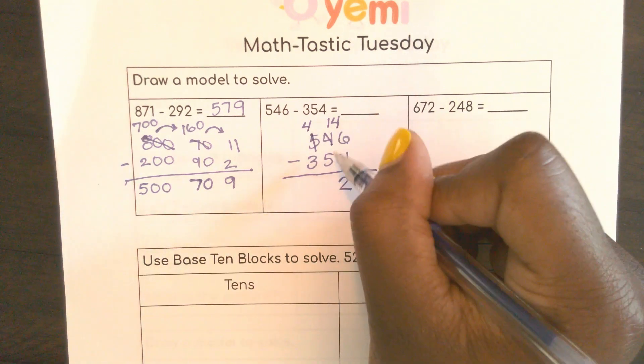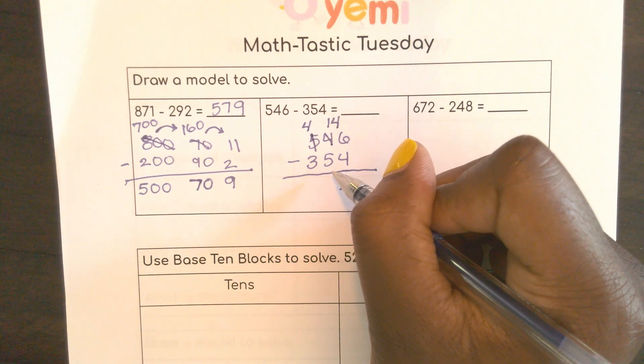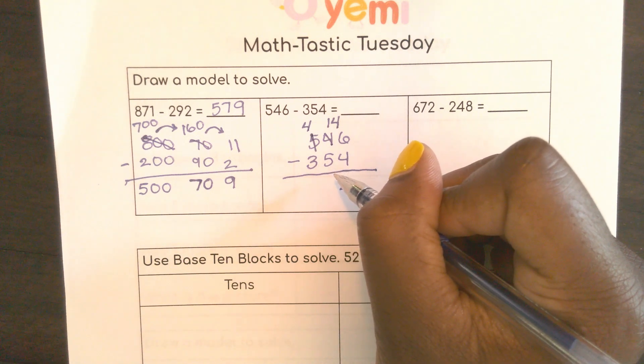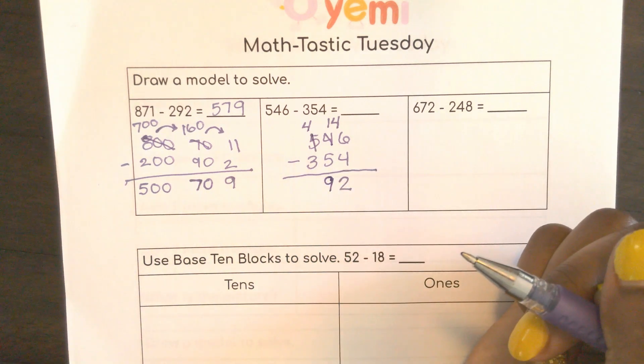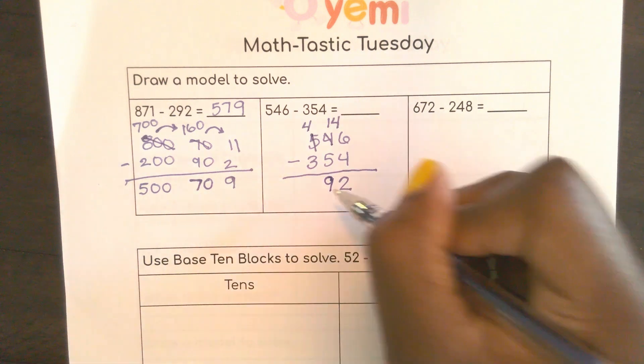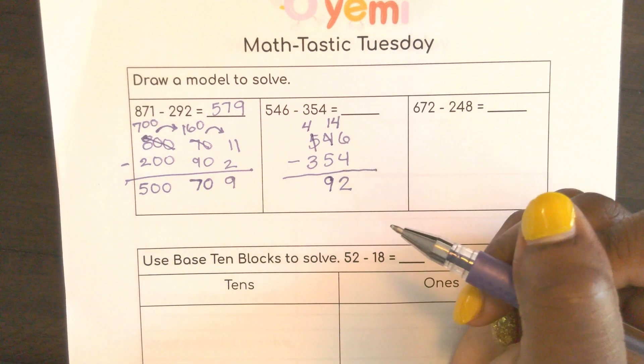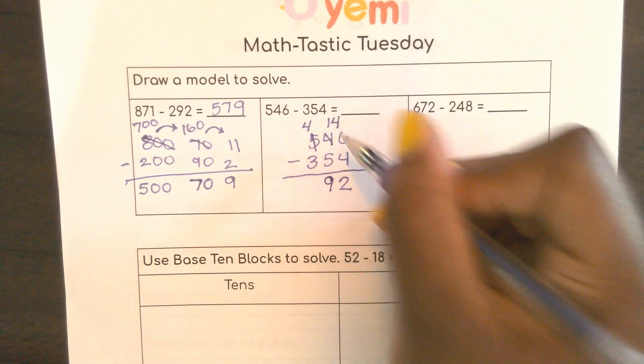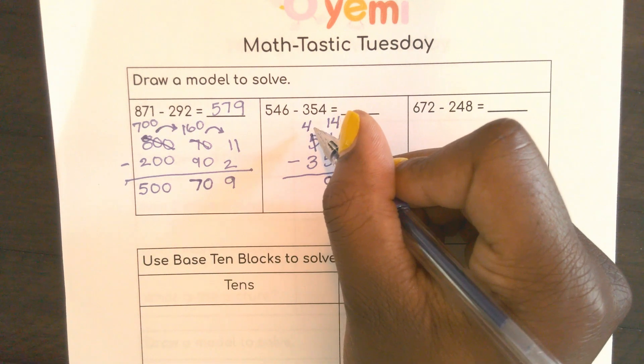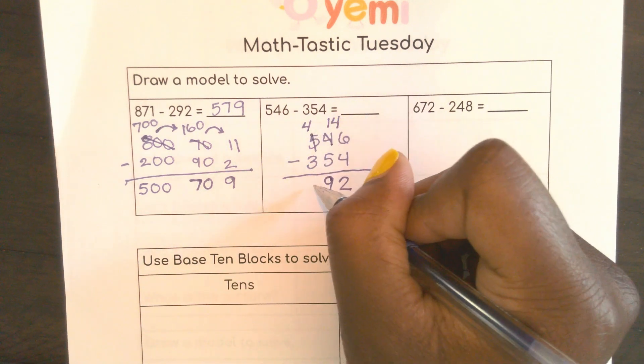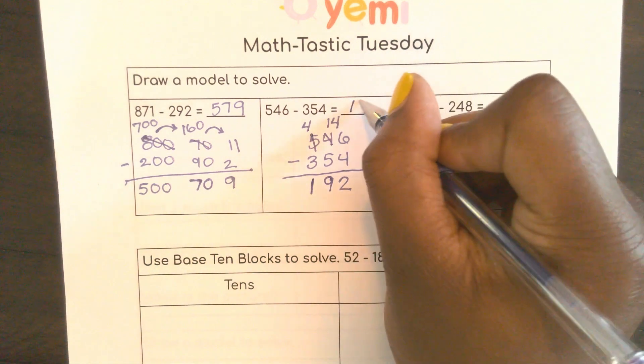So if I did 14 tens minus 5 tens, I would end up with 9 tens. And the way I know that is because 90 plus 50 is 140, or 9 plus 5 is 14. And if I have four hundreds I can take away three hundreds and I would have 100. So I end up with 192.